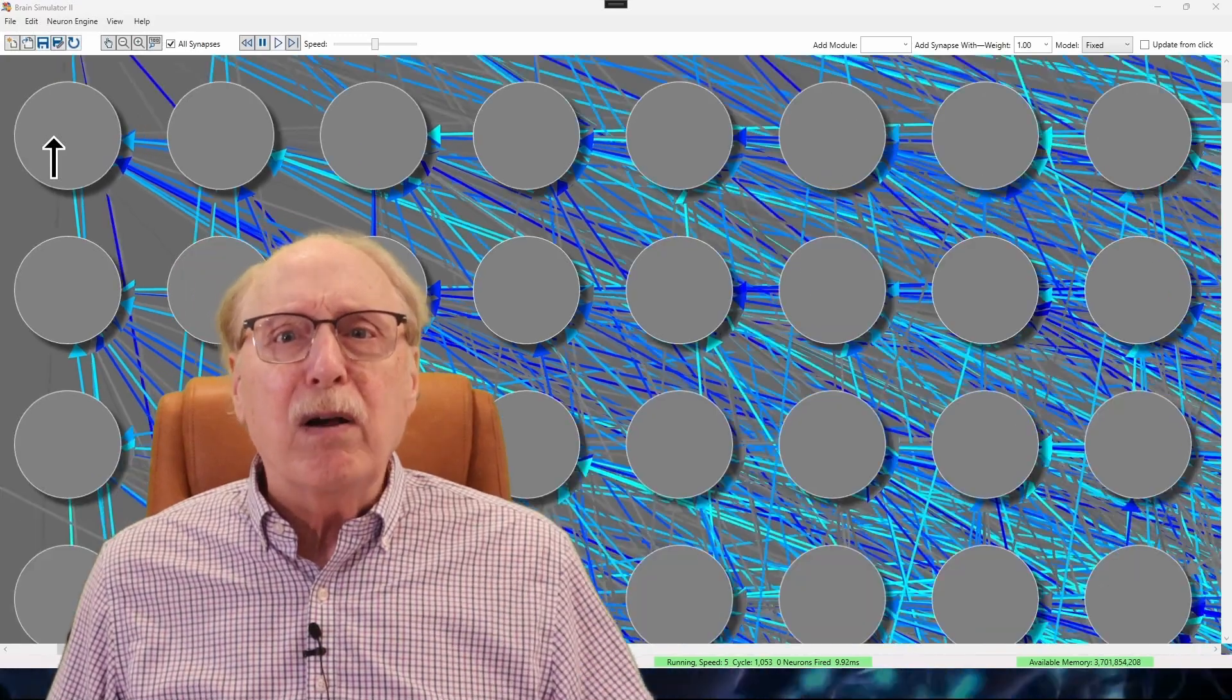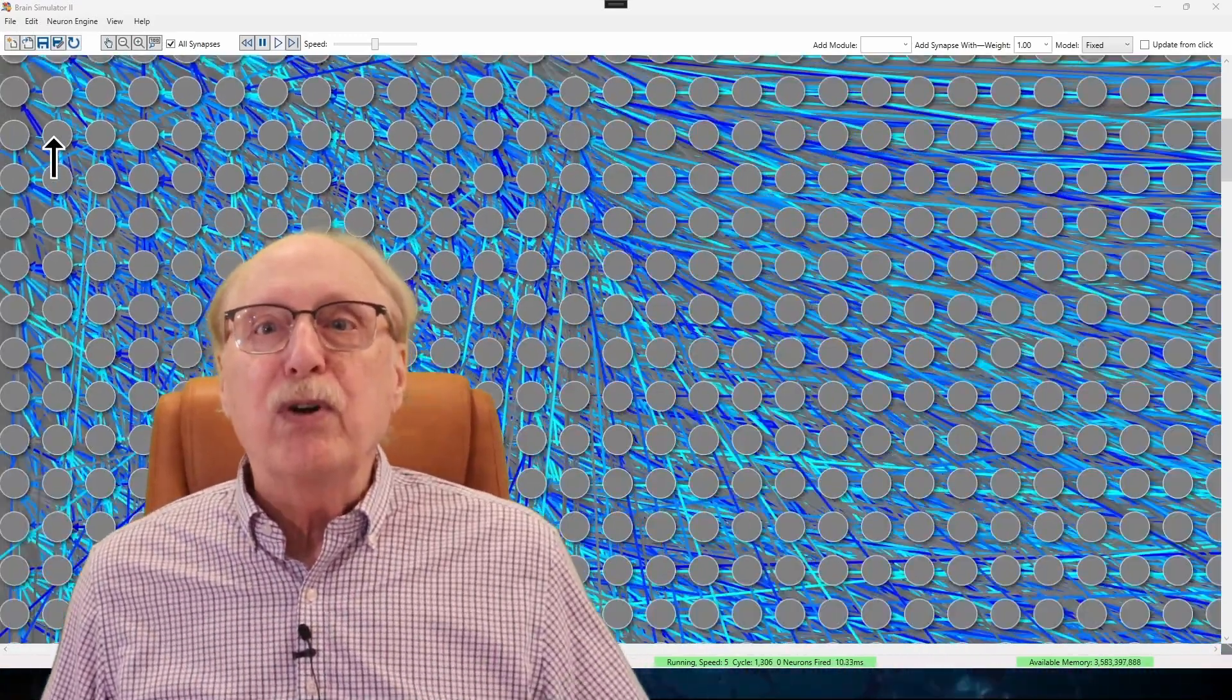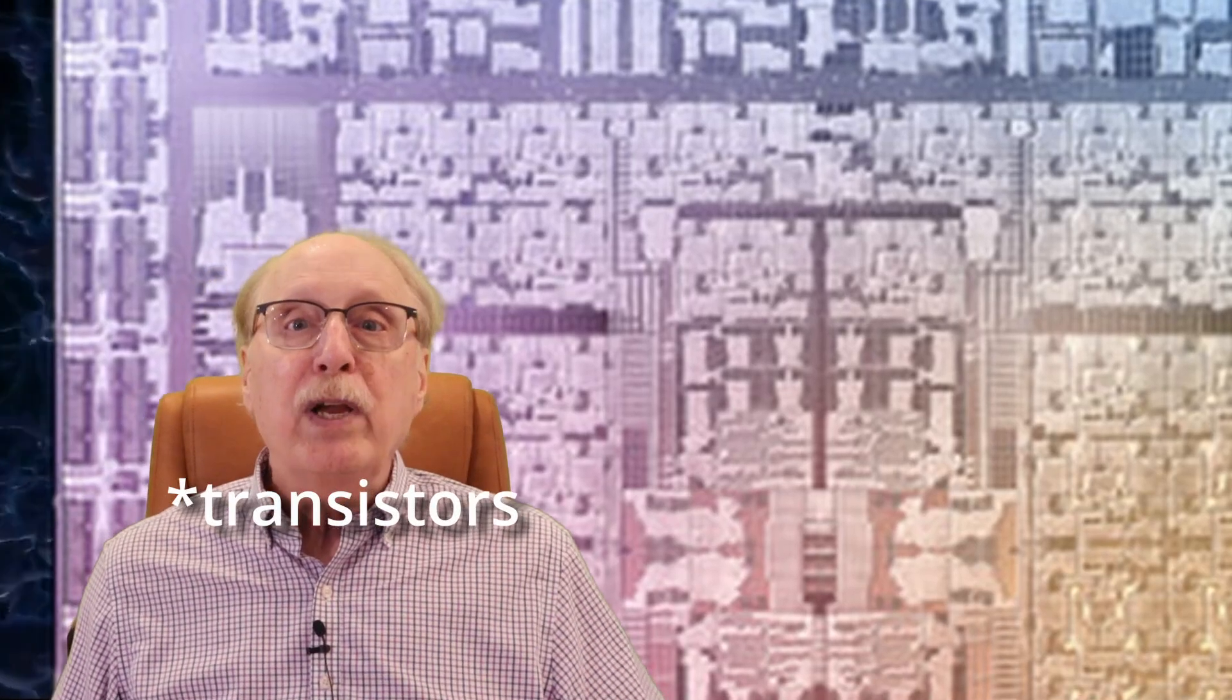So how does the brain compensate for using such slow components? By utilizing a massively parallel architecture. Your brain contains about 86 billion neurons. For comparison, the new Apple M3 Ultra CPU contains 148 billion neurons. Further, if you couple the CPU with 64 gigabytes of RAM, that's at least 500 billion more transistors.